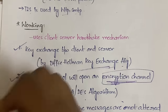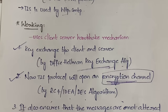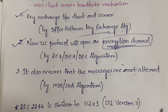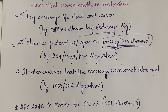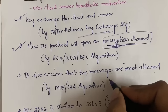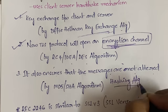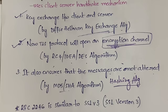In the third step, TLS ensures that messages are not altered. TLS not only prevents attackers from intercepting the data, but also ensures the messages are not changed in transit. This is done using hashing algorithms such as MD5 or SHA.